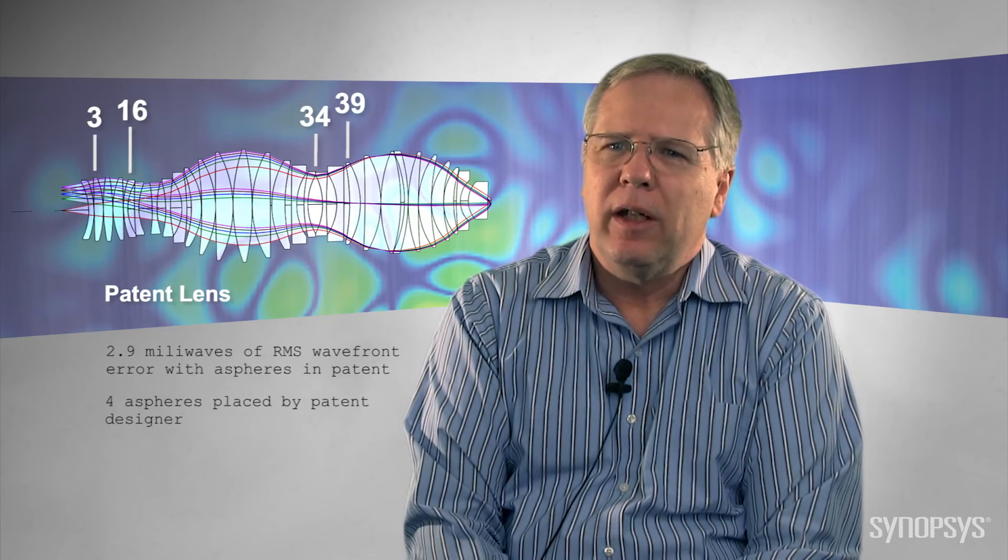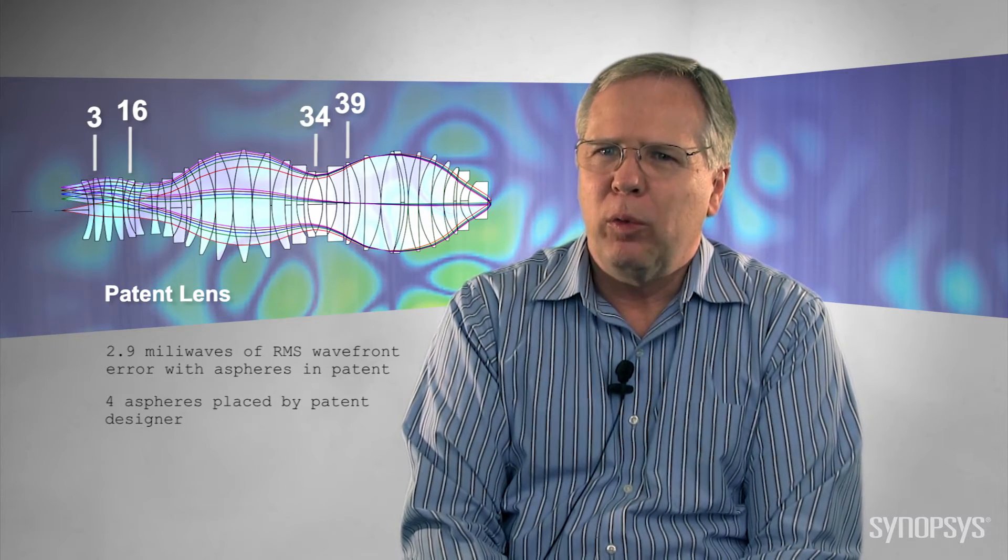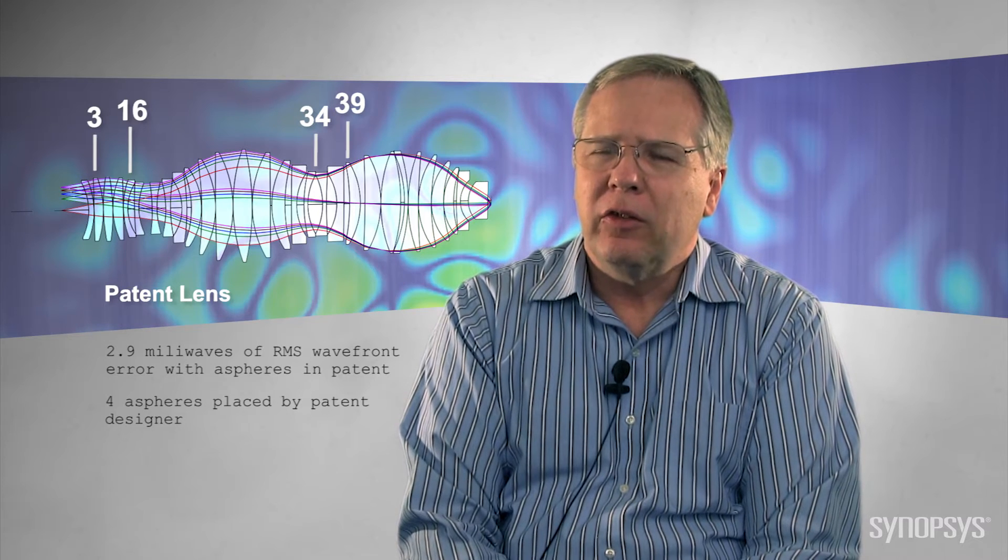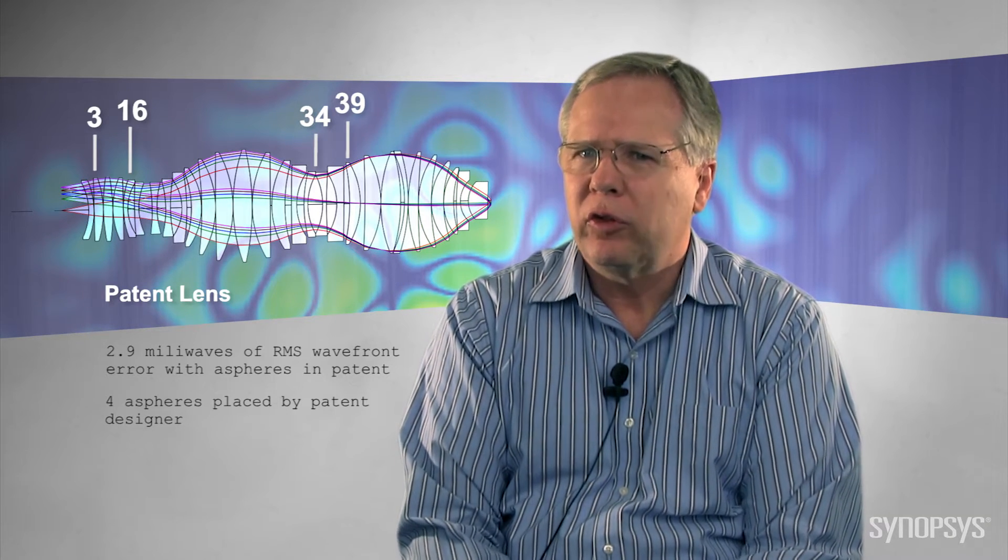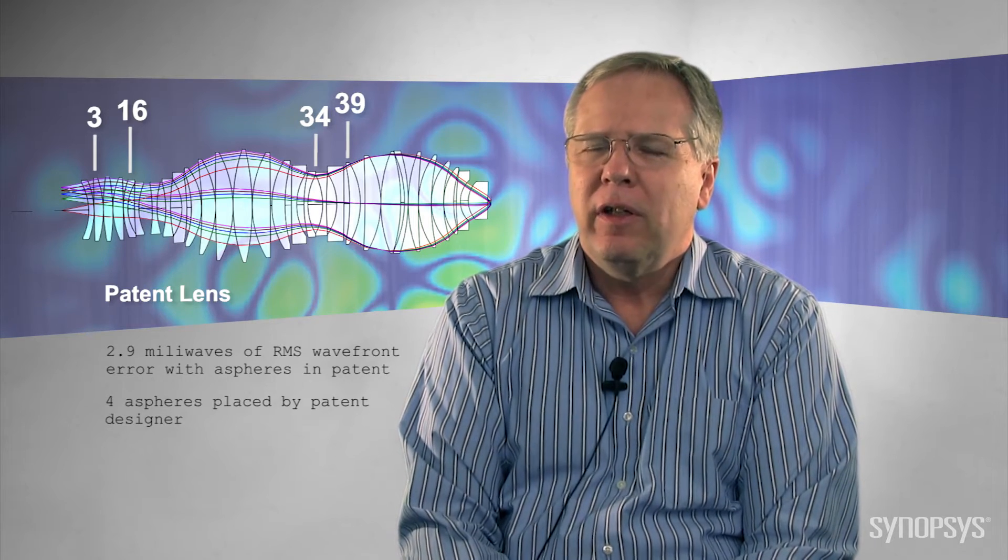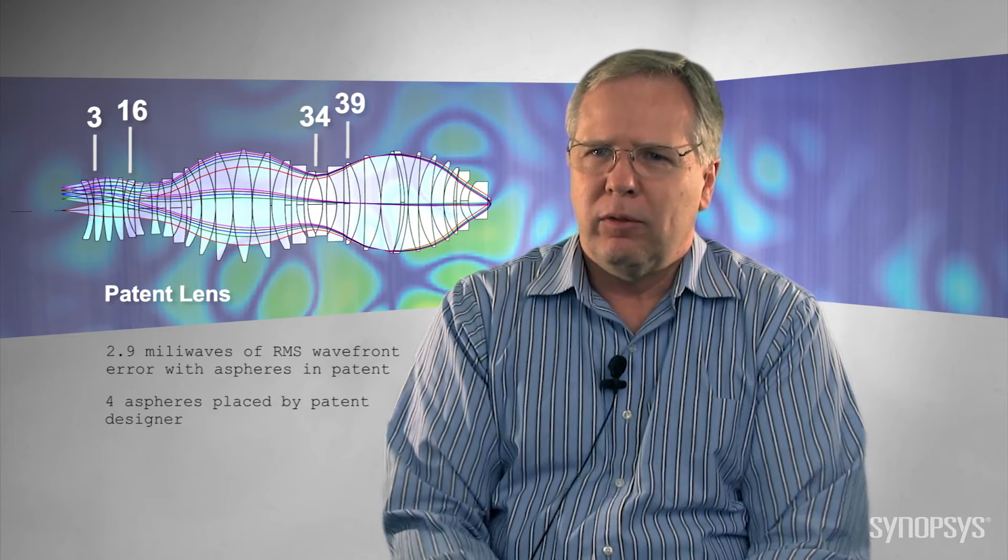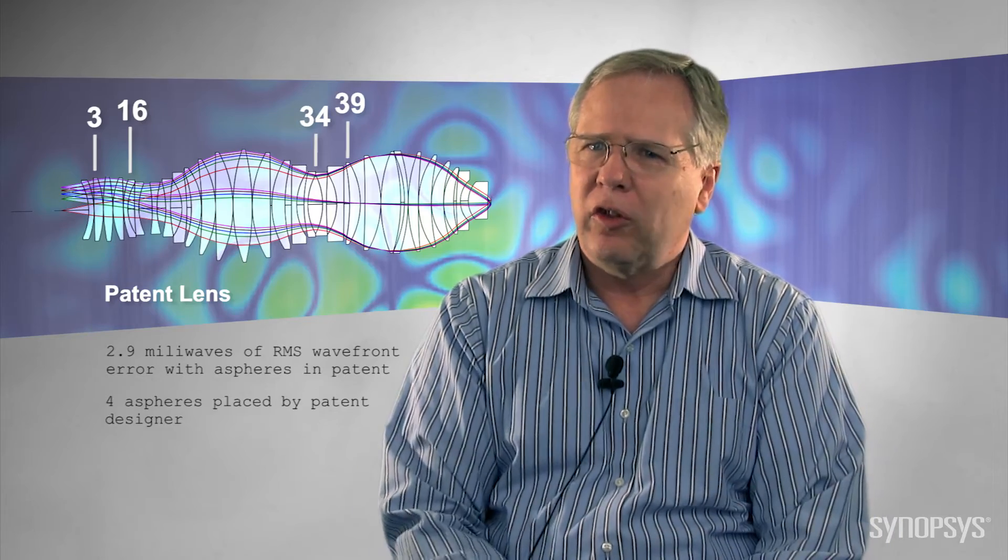For a paper that we gave, we actually developed an example where we started with a patent lens and it had a bunch of aspheres in it. It was a lithographic projection lens, a very complicated lens—I think 29 elements—and we re-optimized it to get rid of the aspheres so that we'd have an all-spherical starting point.